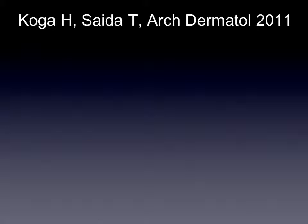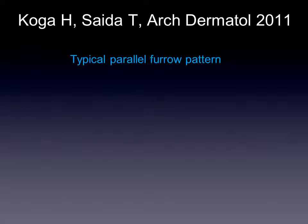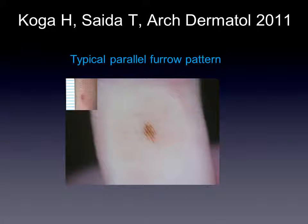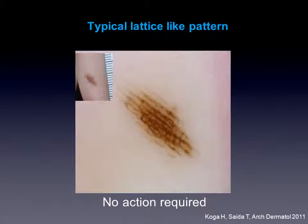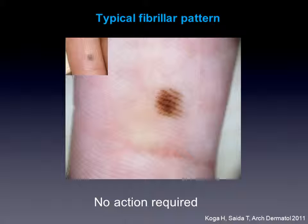Koga and Saida published in the Archives of Dermatology a very useful and practicable algorithm for what to do with acral lesions. If we have a typical parallel furrow pattern, like in this case, we shouldn't do anything. The same applies for the typical lattice-like pattern — as you can see here, a beautiful example. Also, if we have a typical fibrillar pattern in a small lesion, no action is required.